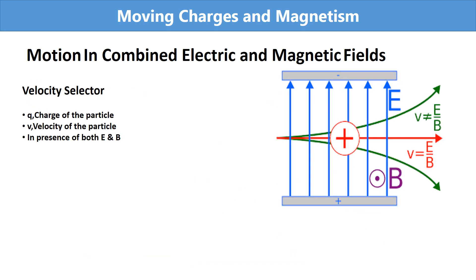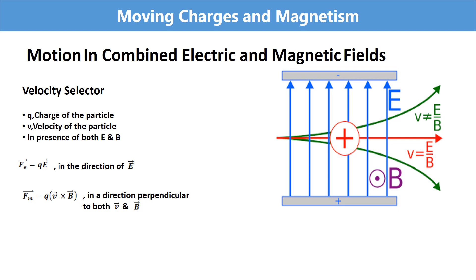When a charged particle moves in an electric field, the force experienced is FE = QE, in the direction of the electric field. When a charged particle moves in a magnetic field, the magnetic force is Fm = Q(v × B), perpendicular to both v and B. In the combined field, the total force on the particle is F = QE + Q(v × B).